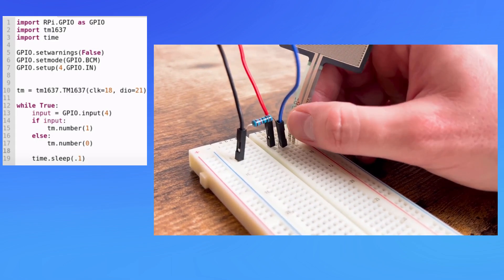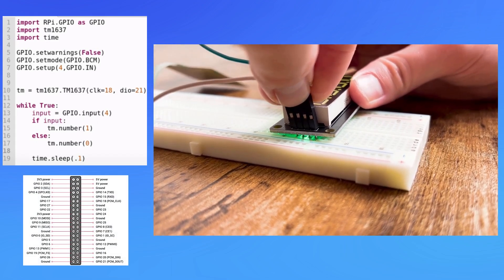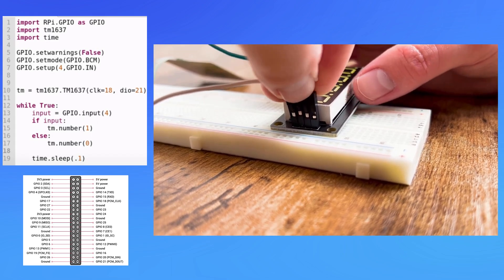Next, we designate the GPIO4 pin as input. Note that the FSR is connected to this pin. The main functionality of the program is within the while loop.